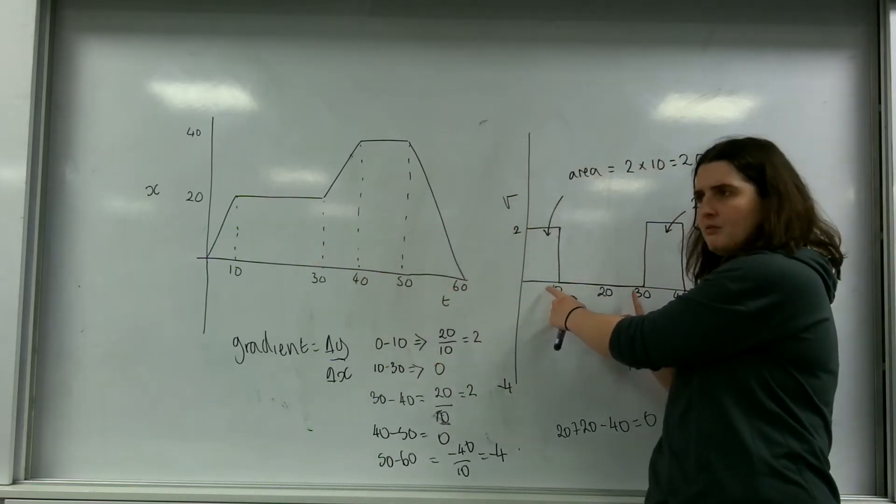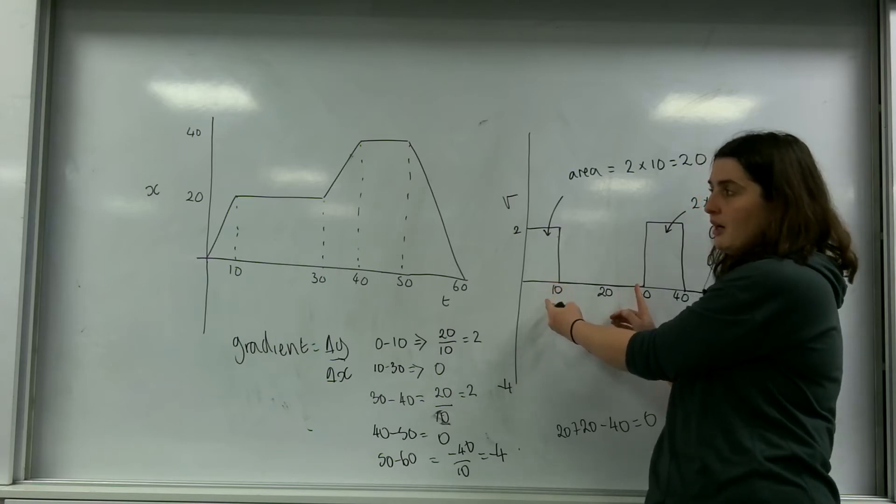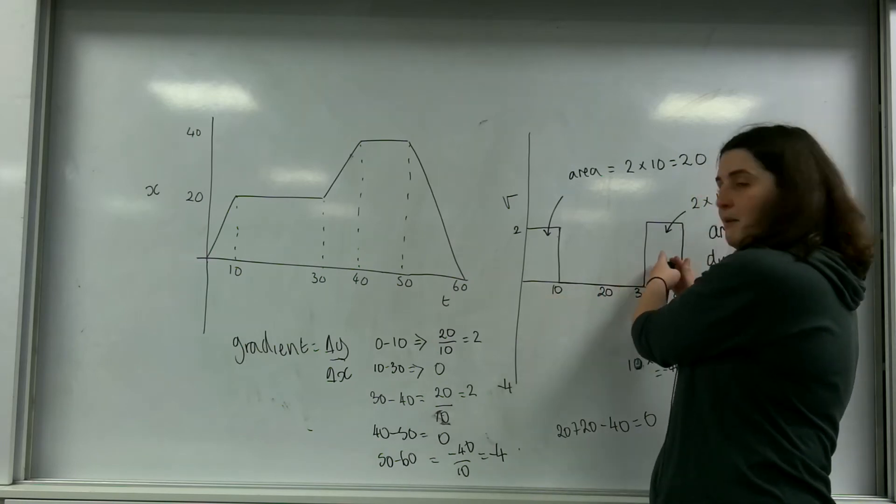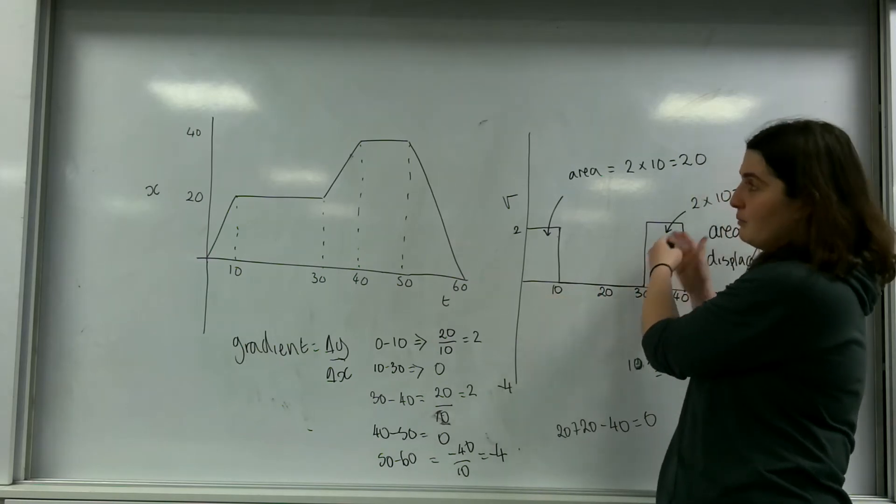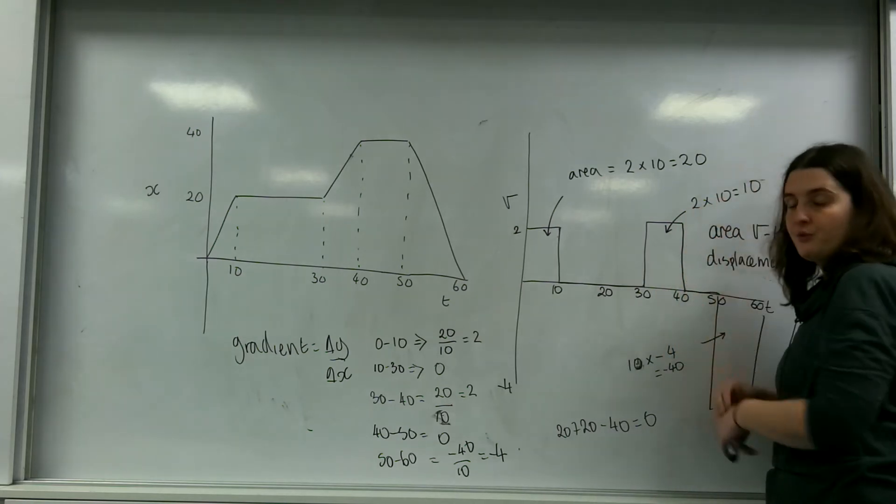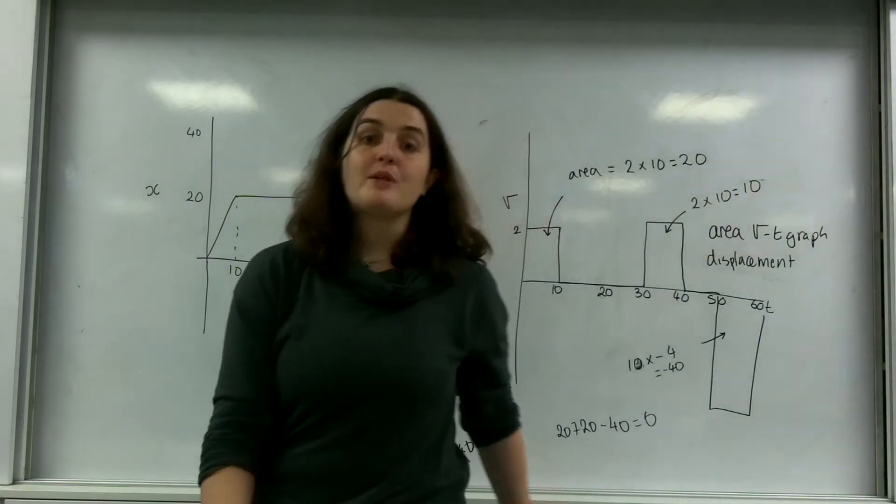Between this time, I didn't change my velocity at all. So I had no velocity, so I must not change my distance. I then moved another 20 positively. So I must have gone up to 40. And in this time here, I must have lost 40 displacement. So this is how you can interchange between two graphs.